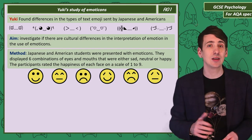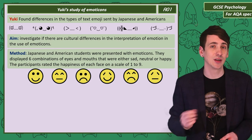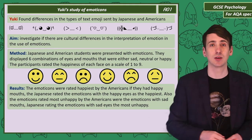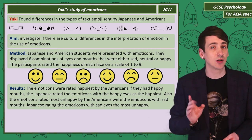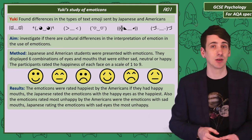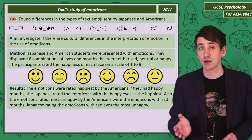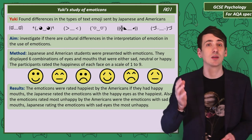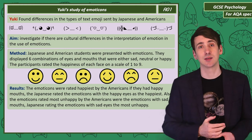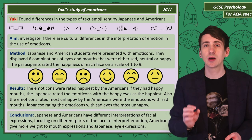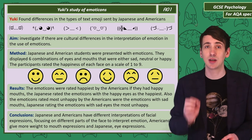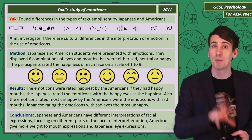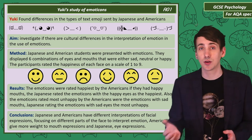Participants rated each face on a scale of 1 to 9. Yuki found Americans rated emoticons with happy mouths as the happiest, but Japanese participants rated emoticons with happy eyes as the happiest. The same pattern was found with sadness — Americans rated sad-mouthed emoticons as most unhappy, while Japanese rated those with unhappy eyes as saddest. Yuki concluded that Japanese and Americans have different interpretations of the same facial expressions, with Americans focusing more on the mouth and Japanese on the eyes.